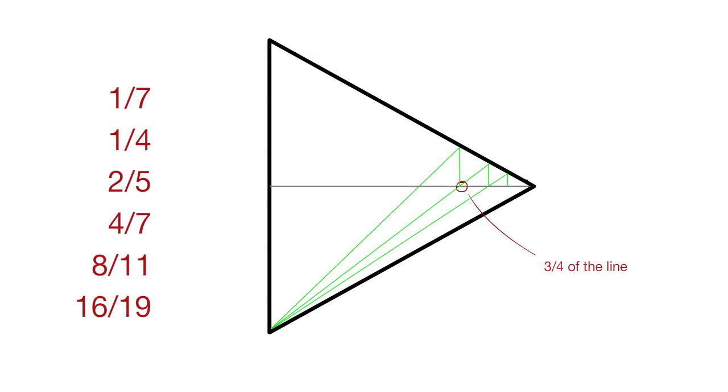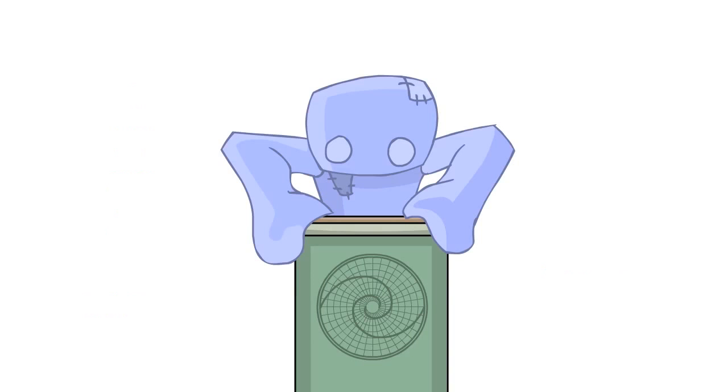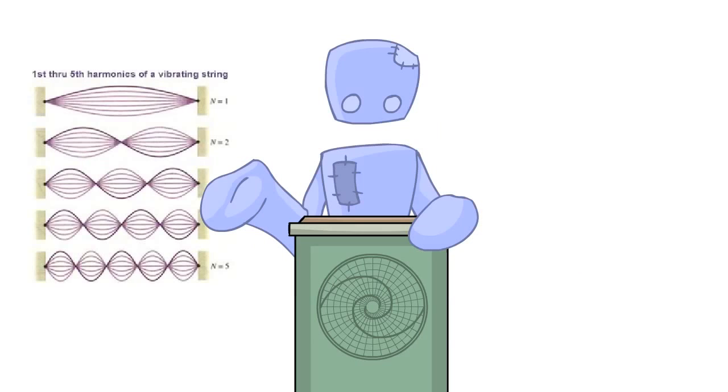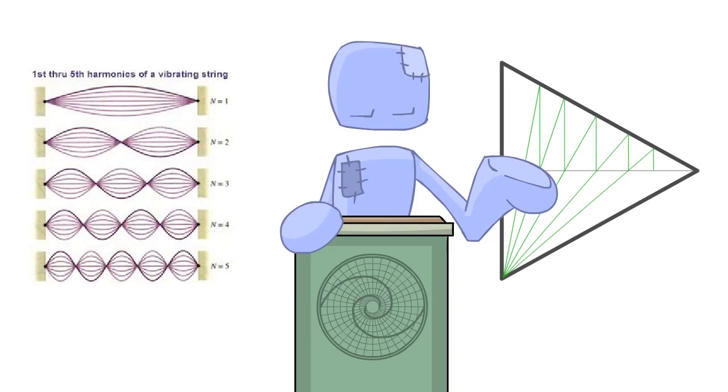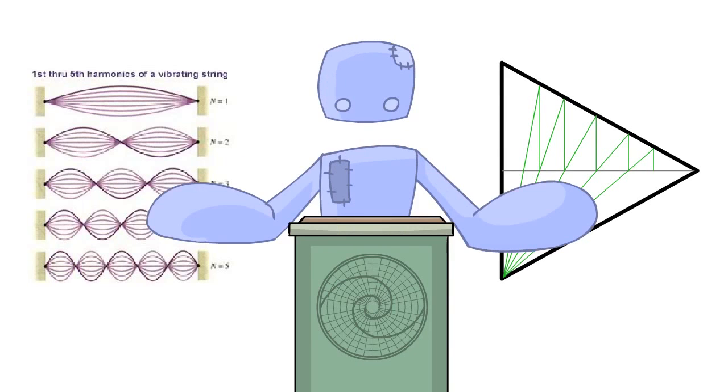Then he tried measuring it in a different way, starting at a different point of the center line. At 3 fourths, he found the measurements were 1 over 7, 1 over 4, 2 over 5, 4 over 7, 8 over 11, and 16 over 19. All of these numbers are musically significant. This is very interesting. It means that the harmonics of music are somehow related to the proportions of the central line moving through a tetrahedron.